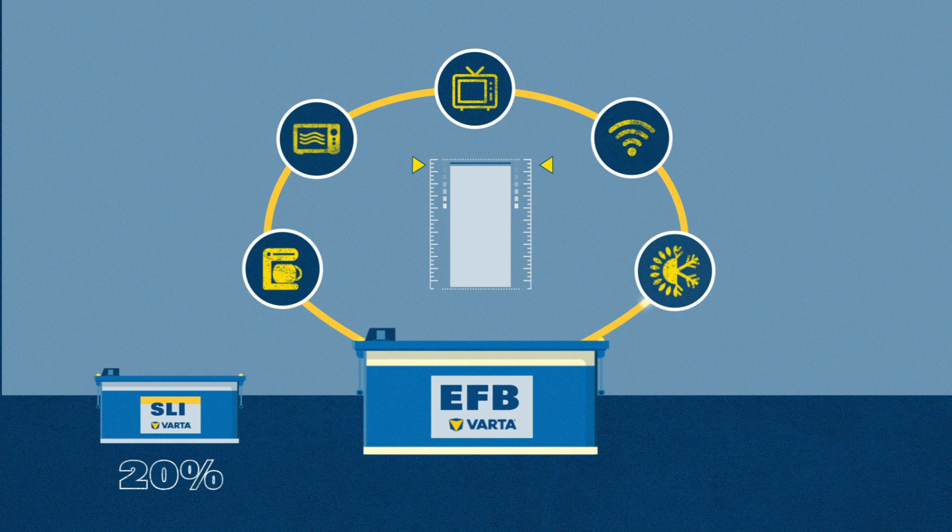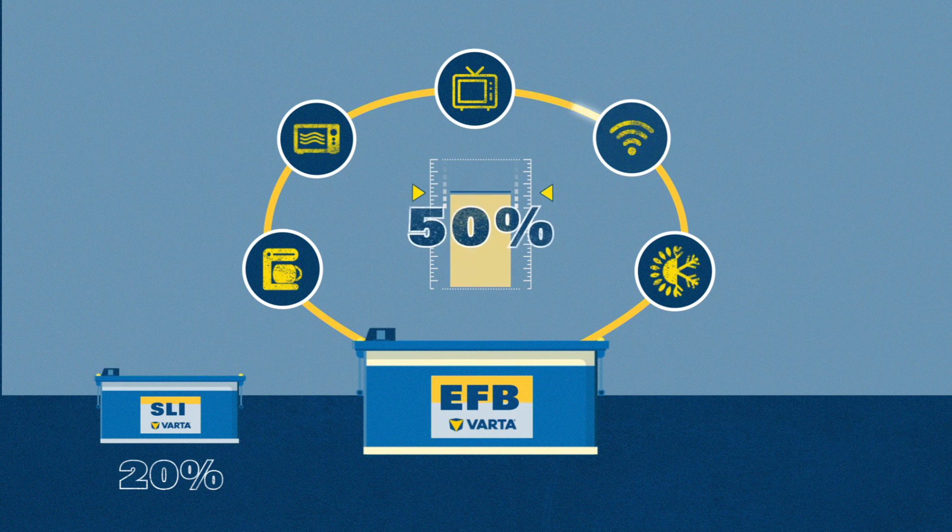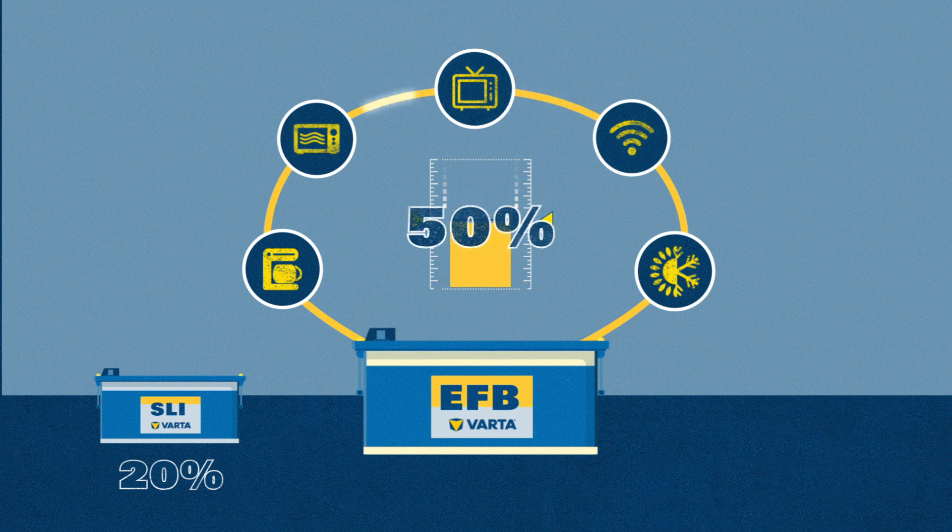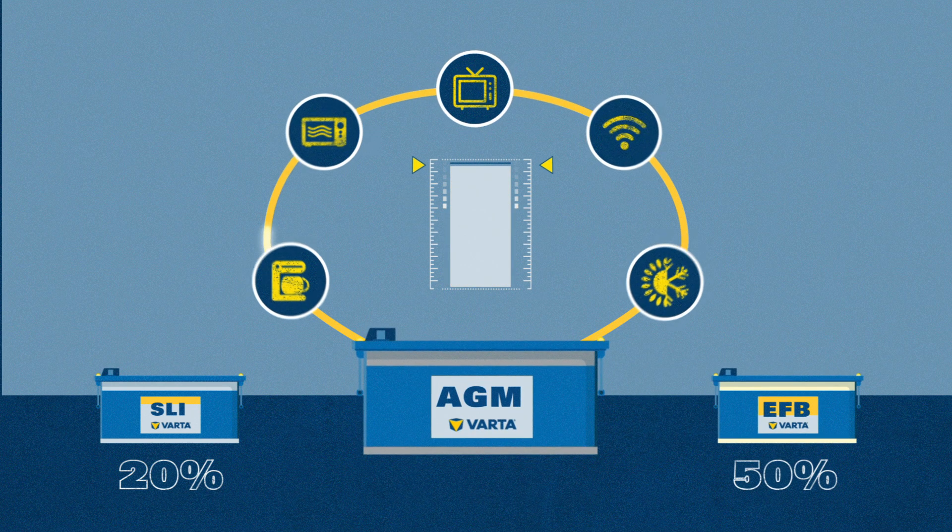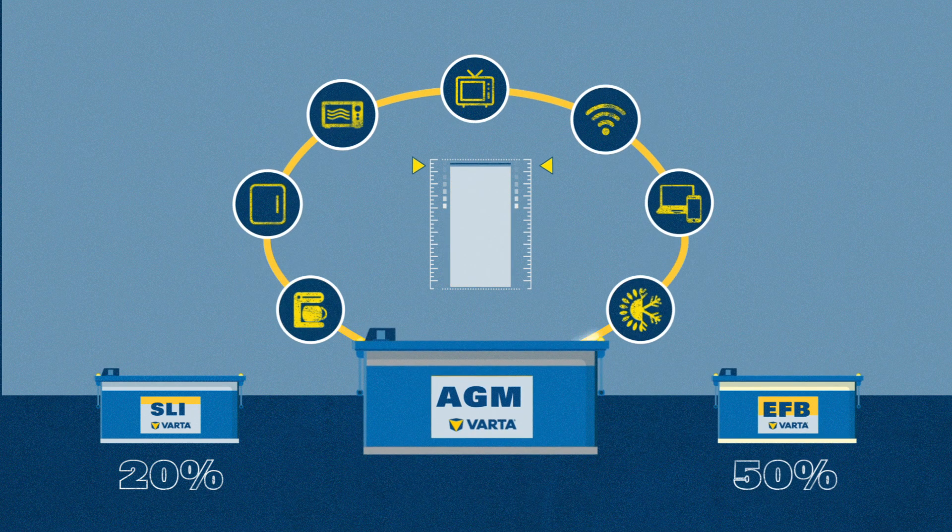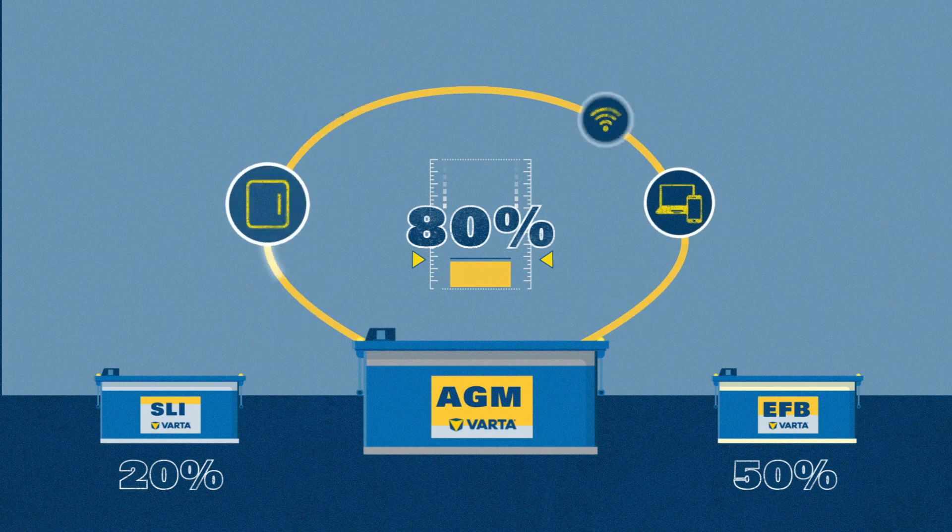Batteries built with EFB technology allow up to 50% of discharge. And the state-of-the-art AGM technology can be easily discharged up to 80% of the specified label capacity without significant impairment of the battery life.